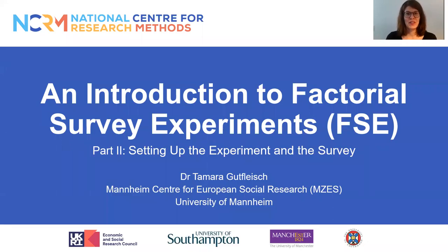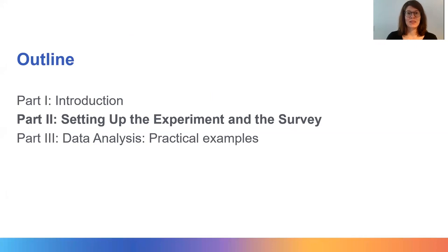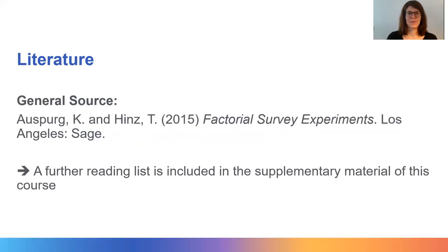Hello and welcome to part 2 of this introductory course to factorial surveys. In the first part, we saw some examples of how factorial surveys are applied in the literature and learned about the main features of this method. In the second part, we will learn about the most important steps in designing and conducting factorial surveys and get an idea of how to analyze the data. I mostly rely on the book by Augsburg and Hintz in this presentation.